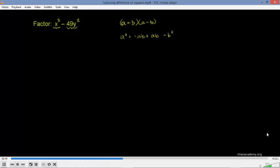Now, these middle two terms cancel out. Negative ab plus ab, they cancel out. And you're left with just a squared minus b squared. And that's the exact pattern we have here. We have an a squared minus a b squared. So in this case, a is equal to x, and b is equal to 7y. So we have x squared minus 7y, the whole thing squared.